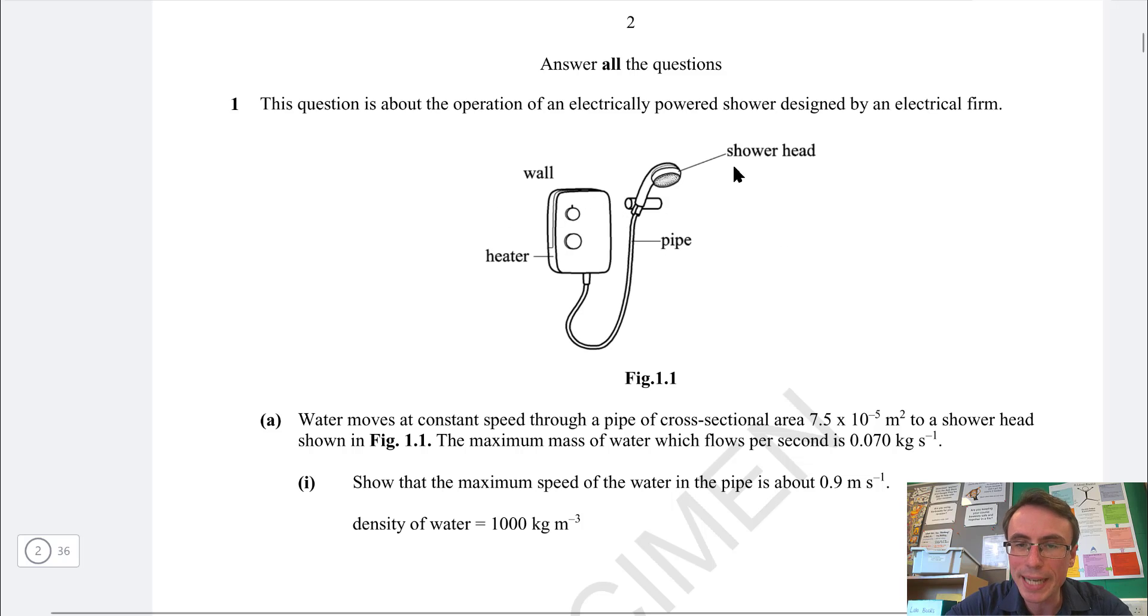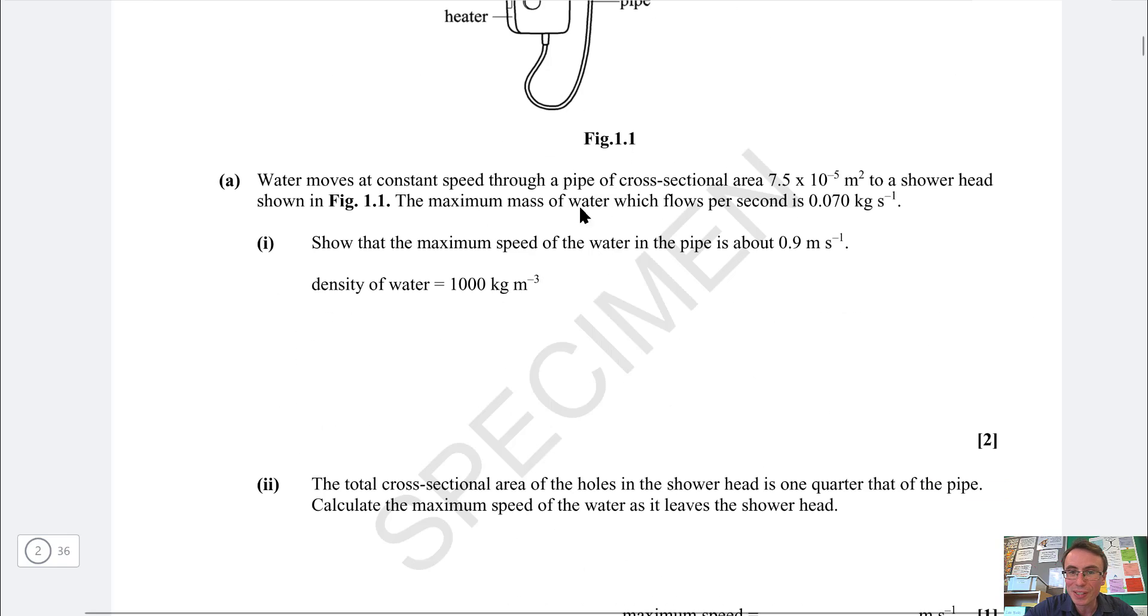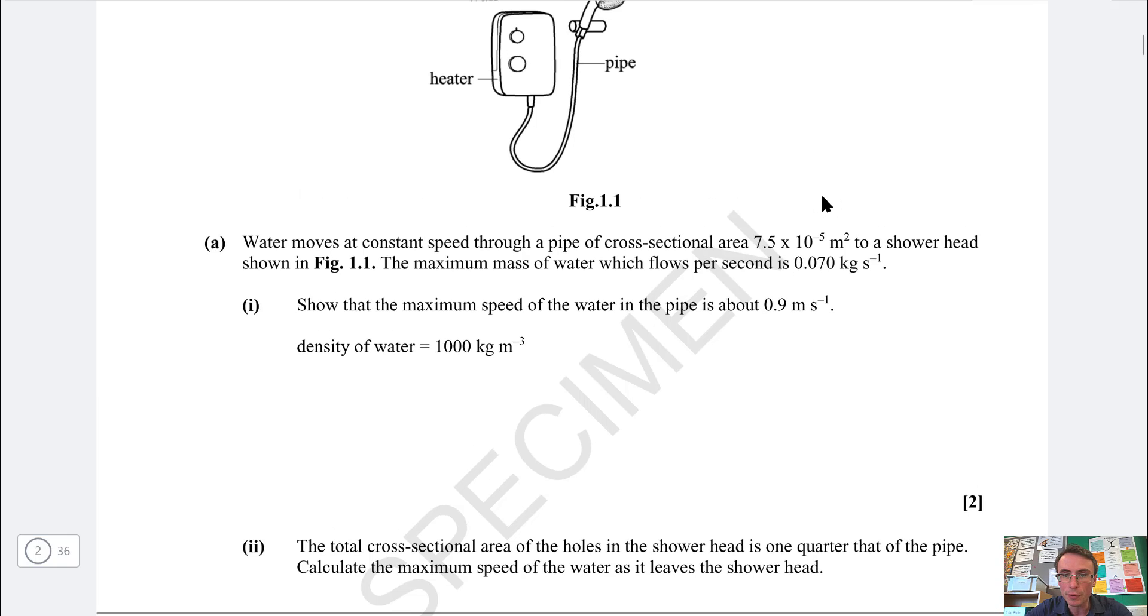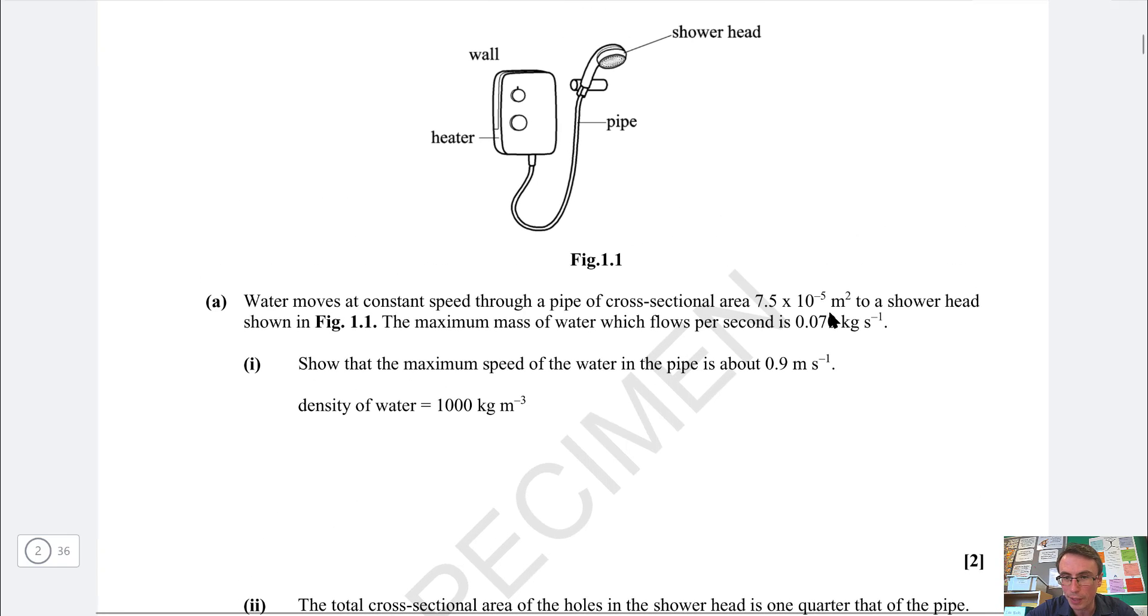We have a wall that's connected to a heater and then this goes to a shower head. Water moves at constant speed through the pipe of cross-sectional area 7.5 times 10 to the power minus 5 to the shower head. The maximum mass of water which flows per second is 0.07 kilograms per second. Show that the maximum speed of the water in the pipe is 0.9 meters per second.